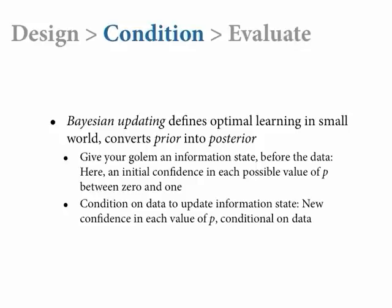Our golem has some initial information state. For each possible value of P between 0 and 1 — an infinite number — we need some initial information state. These initial information states are called priors. Here it's going to be a flat or uniform prior between 0 and 1, equal weighting. We say we've got a machine that has no prior expectations about how much water covers this globe. Your machine doesn't know you're standing on land. This gets conditioned on the data, and the relative confidence in all the infinite values of P change. It's actually pretty easy — let me walk you through the cartoon version of how this works.